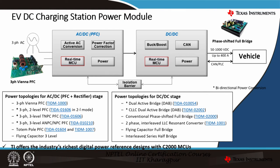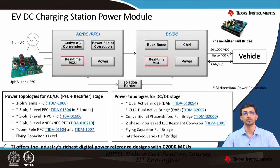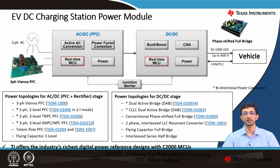To give a brief overview of TI designs available for power topologies — for AC-DC as well as DC-DC stages — in the AC-DC (PFC plus rectifier) stage, we have a three-phase Vienna rectifier PFC, three-phase two-level PFC, TNPC PFC, ANPC/NPC PFC, totem pole PFC, and a flying capacitor three-level. In the DC-DC power topologies, we have a dual active bridge, a CLLC dual active bridge, a conventional phase-shifted full bridge (PSFB), a two-phase interleaved LLC resonant converter, a flying capacitor full bridge, and an interleaved series half bridge. These designs are provided free of cost on TI.com. The software is also available in the digital power SDK as well as the motor control SDK.